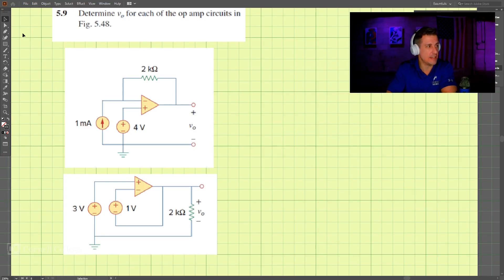This is problem 5.9. In 5.9 we're to determine v_out for each of the two circuits. So we have two circuits, this one and this one, and we're looking to find v_out.